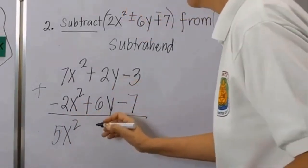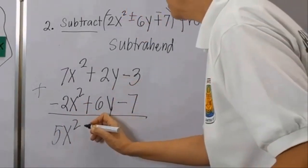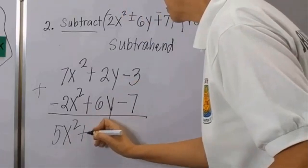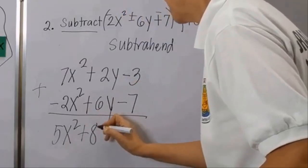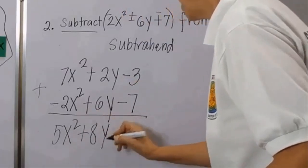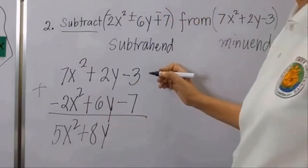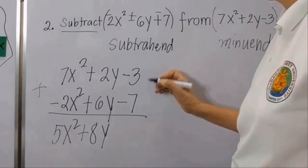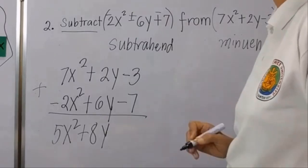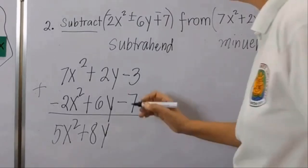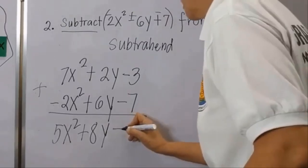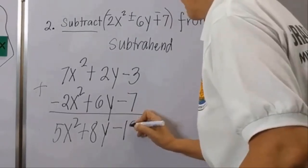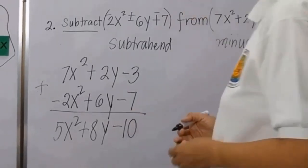Proceeding to ordinary addition: 7 minus 2 is 5x squared. Then 2 plus 6 equals 8y. And negative 3 plus negative 7 is negative 10. So the answer is 5x squared plus 8y minus 10.